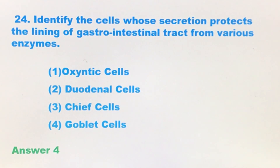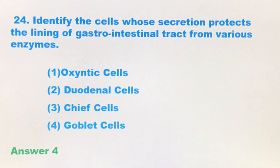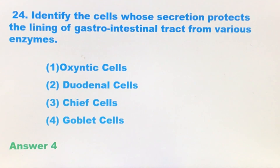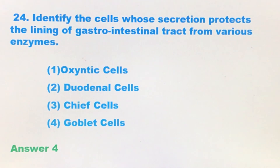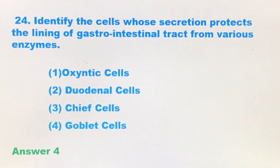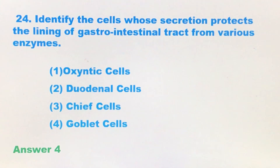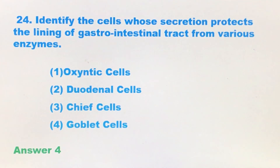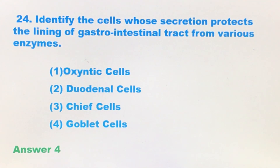The third option is chief cells. Chief cells are also present in the gastric gland of the stomach and are also called peptidic cells. This chief cell releases a precursor enzyme called pepsinogen — precursor enzymes are called zymogen, so pepsinogen is a zymogen — and it also releases gastric lipases. This also obviously does not protect the GI tract.